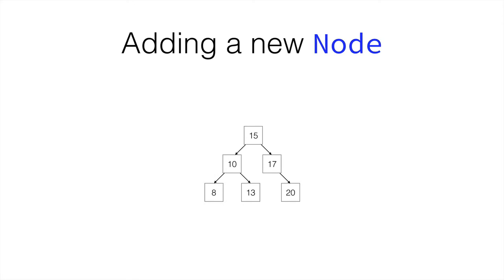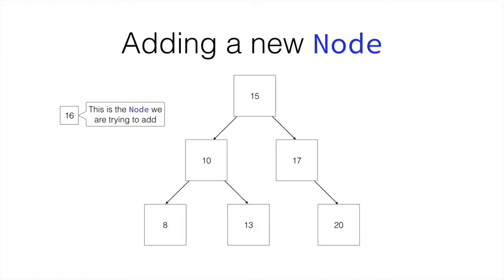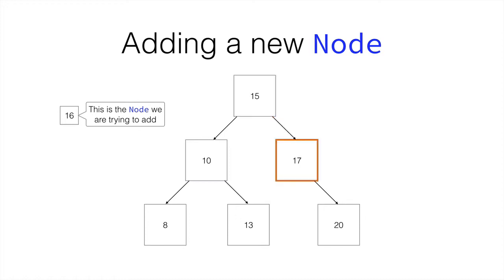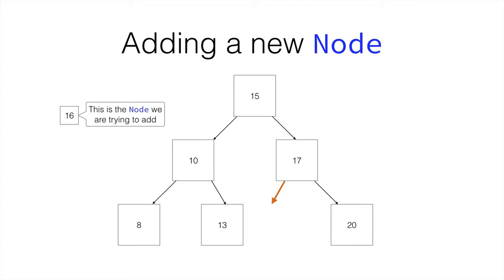Let's see how we could add a new node to this binary tree. Let's try to add 16 to it. We make the diagram bigger so you can see. We start at 15 and create a marker node to keep track of where we are. Then we ask ourselves: is 16 greater than 15? It is, so we go right — now we are at 17. Then we ask: is 16 greater than 17? No, it is not, so we go to the left. But we don't have a node to the left, so we create a new one and place 16 there.